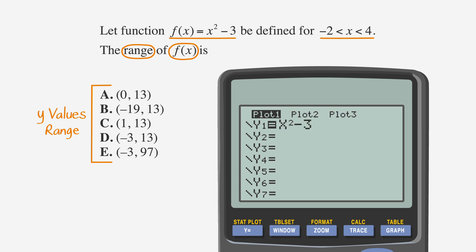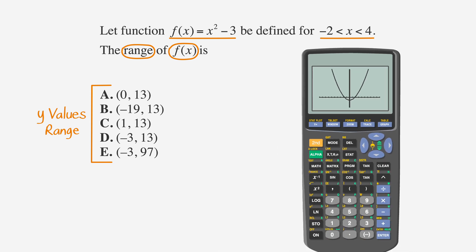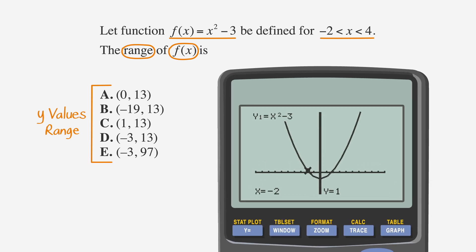In school, you might have been taught to use the table function, but we can more easily see all of the possible values of y if we graph the function by pushing the graph button. The graph will let us see all of the y values between x equals negative 2 and x equals 4. To find the value of y at x equals negative 2, let's use the trace function: punch trace, negative 2, enter. When x equals negative 2, y equals 1. Using the same trace function when x equals 4, we find that y is 13.